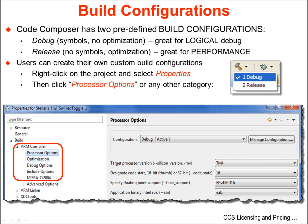Code Composer Studio has two predefined build configurations: debug and release. The debug configuration includes symbol tables and no optimization. The release configuration is better for performance but contains no symbol tables and the code has been optimized, which can make debugging difficult or impossible. You can create your own custom build configurations by right-clicking on the project and selecting Properties, then clicking Processor Options or any of the other categories you want to change.